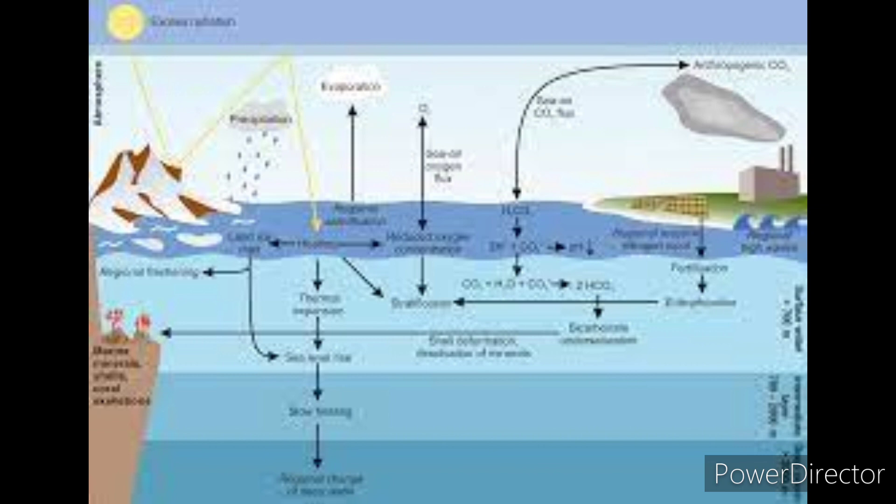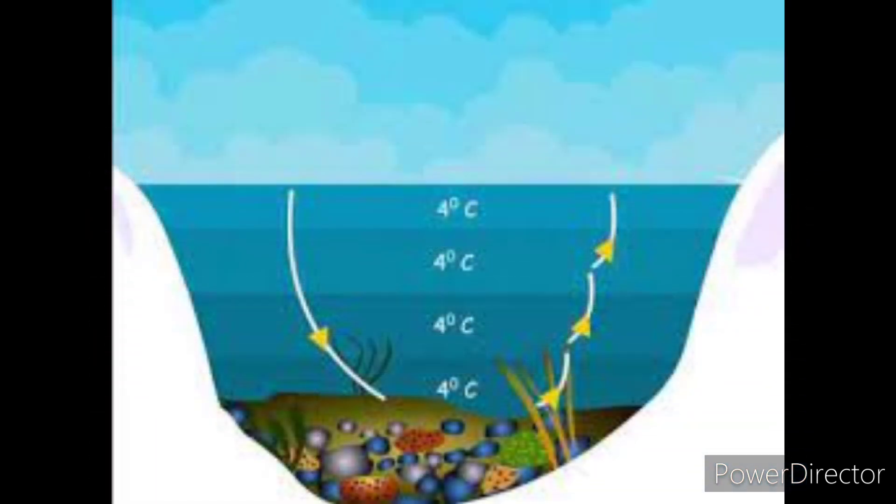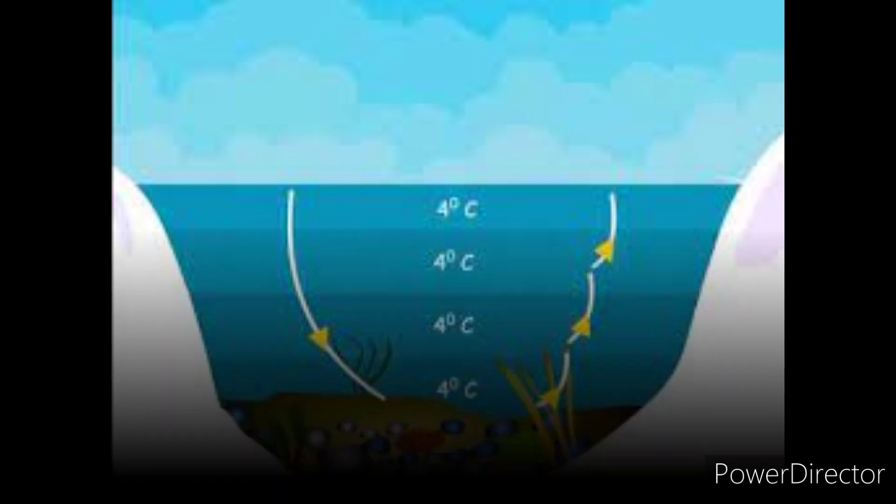When the water temperature in a pond decreases, the upper layer of denser water drops to the depth and the water below rises up. The same phenomenon repeats itself and the process continues until the water temperature reaches 4 degrees Celsius.